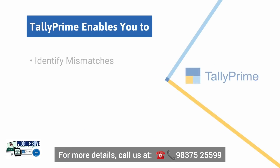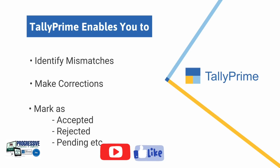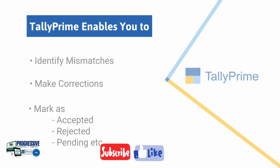It identifies mismatches and enables corrections in your books. After cross-checking with the data imported from GSTR2A, you can mark the status as Accepted, Rejected, Pending, Modified, and so on.